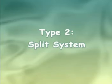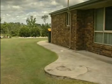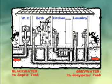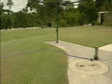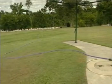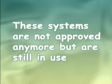An older type of septic tank system is a septic tank with a split grey water disposal. The split system has two tanks as well as a grease trap. One tank takes toilet waste only and treats it through the septic tank. The other tank collects grey water in a separate pump well where it can be surface irrigated over the lawn or garden. These systems are not approved anymore but are still in use.